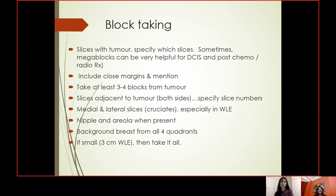For block taking, take slices with tumor and specify which slices. Megablocks can be very helpful for DCIS and post-chemo or radiotherapy specimens. Include close margins and mention which margins have been included. Take at least three to four blocks from the tumor, slices adjacent to the tumor on both sides specifying slice numbers, and medial and lateral slices for cruciates — especially in wide local excision. Take the nipple and areola when present and background breast from all four quadrants. If it is a small wide local excision up to three centimeters, embed it entirely.